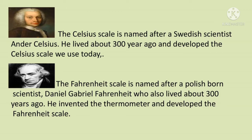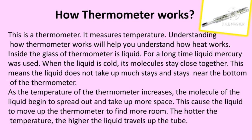The Celsius scale is named after a Swedish scientist, Anders Celsius, who lived about 300 years ago and developed the Celsius scale. The Fahrenheit scale is named after a Polish-born scientist, Daniel Gabriel Fahrenheit, who also lived about 300 years ago. He invented the thermometer and developed the Fahrenheit scale.